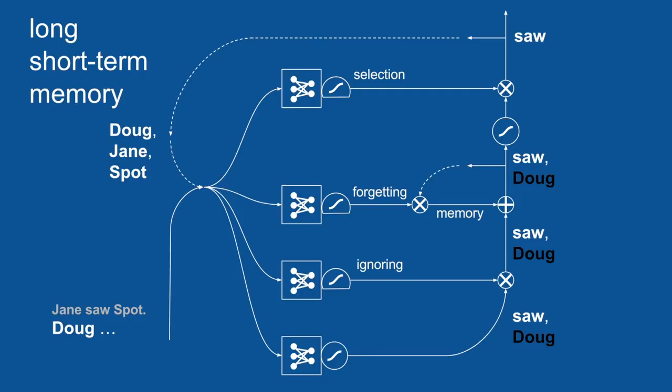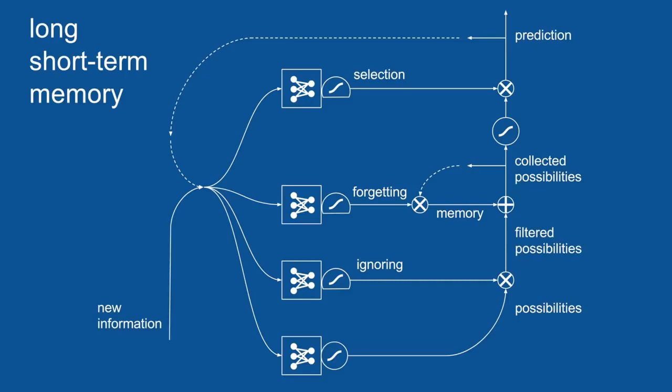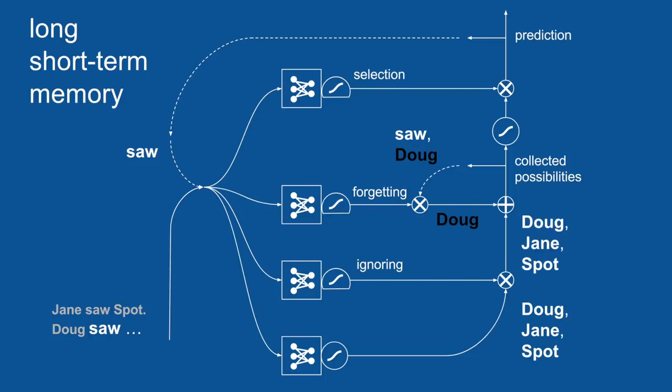So we take a step forward in time now. The word saw is our most recent word and our most recent prediction. They get passed forward to all of these neural networks and we get a new set of predictions because the word saw just occurred. We now predict that the words Doug, Jane or Spot might come next. We'll pass over ignoring and attention in this example and we'll take those predictions forward. Now, the other thing that happened is our previous set of possibilities, the word saw and not Doug, that we were maintaining internally, get passed to a forgetting gate.